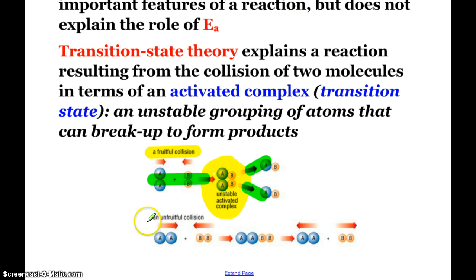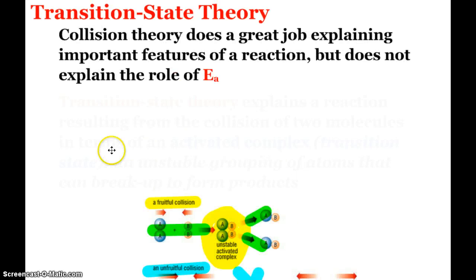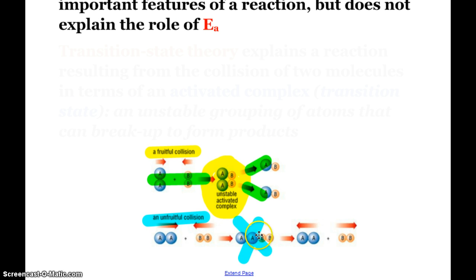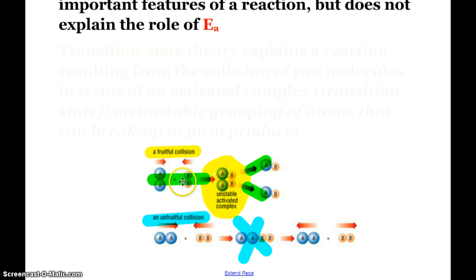We will potentially see formation of products. Unlike the unfruitful collision, even though they collide, they collide in the improper orientation and simply bounce apart. When looking at collisions and orientations, they like to say there's a very specific location on the surface of the molecules that must be colliding appropriately. That's one way they explain orientation.